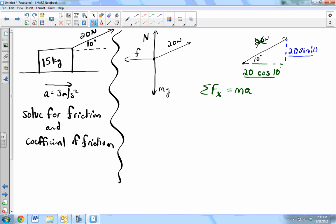We have the force of the pole which is this 20 cosine 10. And we have friction. Plus or minus. Minus f because it's going in the opposite direction. Equal to ma.